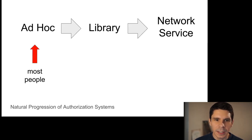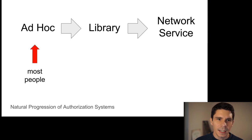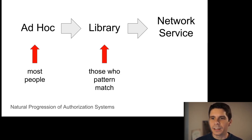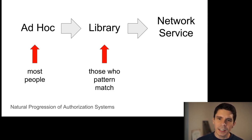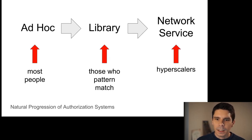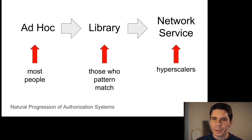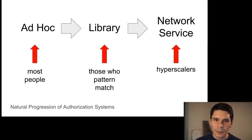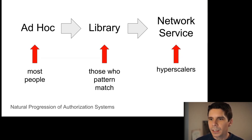Most people actually start with an ad hoc authorization system — they throw a few relationships in the database and interpret them in their source code. As time goes on, they realize they're doing this over and over again, so they extract that into a library. Once the library is built, they compile it into any services that need to do the same work. After that, people realize they need to ask questions from multiple microservices built in different languages, so they end up with a network service.